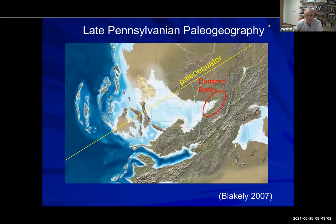A closer look: the red circle highlights where the Dunkard Basin is located — again, the northern portion of the Appalachian Basin. We really don't have any upper Pennsylvanian sediments south of this in the Appalachian Basin; they've been eroded off. You can see the tropical location within two or three degrees of the paleo equator. Going westward across this slide, you go from the Dunkard Basin into the Illinois Basin and then into basins in the mid-continent area.